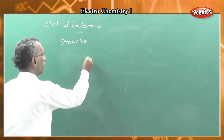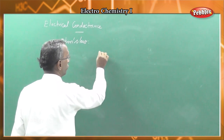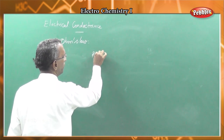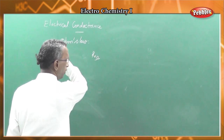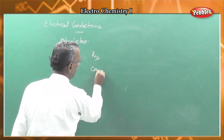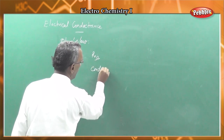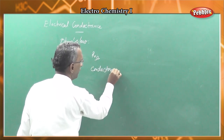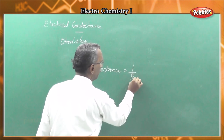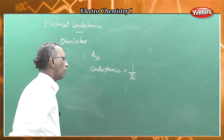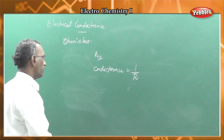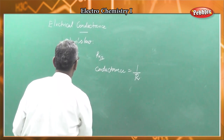Resistance is a hindrance to the flow of current, that is, the flow of charges. Resistance R is measured in ohms. Conductance is the reciprocal of resistance, that is, conductance equals 1 by R.